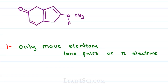Resonance is the movement of electrons between different atoms. That means you do not change the structure — you don't move the atoms and you don't break any sigma bonds. You can move lone pairs and you can move the double or triple bond pi electrons.